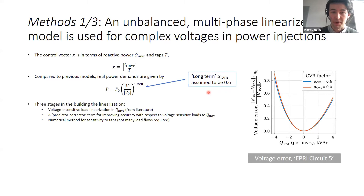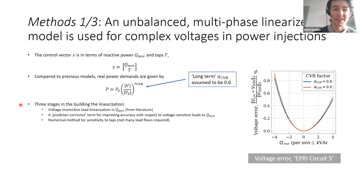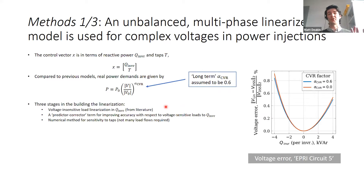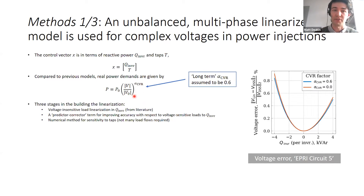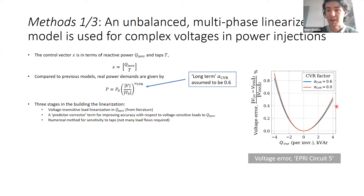There are three stages. We don't have the most elegant linearization — if I were to do this again, I would say use a Jacobian if you can, it tends to work a bit better. First we assume that everything is a constant power injection. Then we use this model to linearize in terms of the power injections to correct for voltage sensitivity, which gives us curves on the right showing that even though we use this sort of hack, it works pretty well.